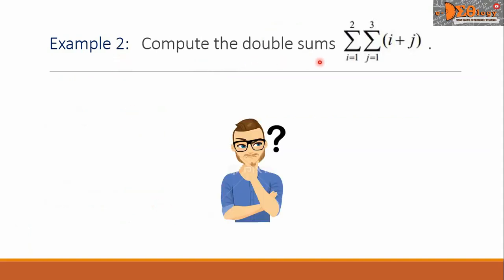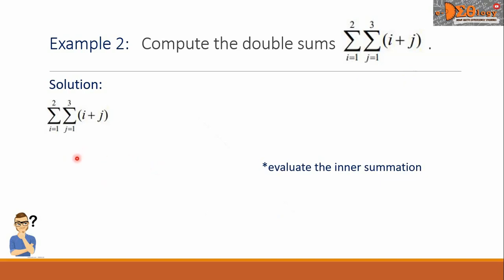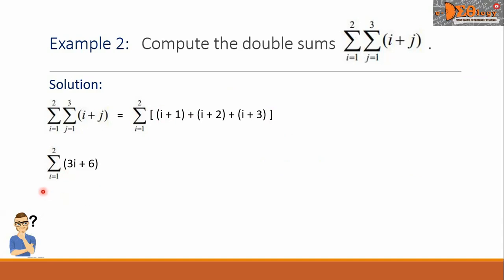Example two: compute the double sums. We copy the double sums here, then evaluate the inner summation by replacing variable j with numbers from one to three. We get the quantity i plus one, plus the quantity i plus two, plus the quantity i plus three. Removing the grouping symbols and combining like terms, with the outer summation from i equals one up to two, we simplify these expressions into three i plus six.